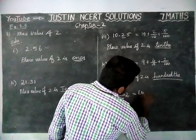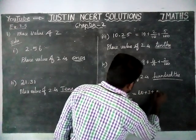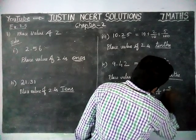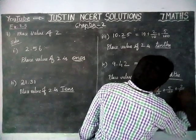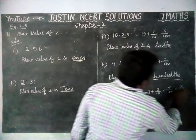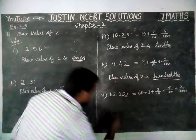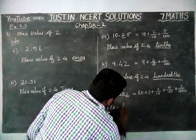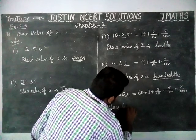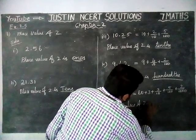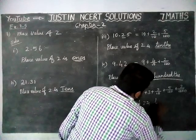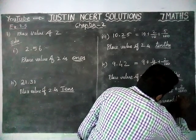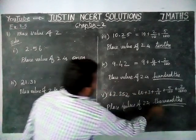And then here, 63.352, so 60 plus 3 plus 3 by 10 plus 5 by 100 plus 2 by 1000. So here, place value of 2 is equal to thousandths place.